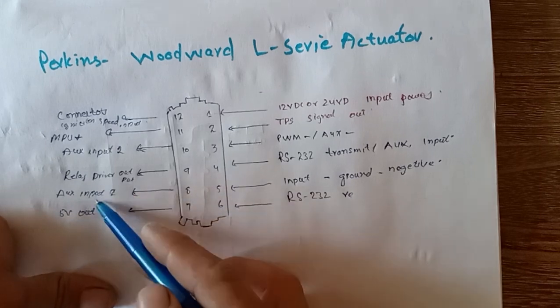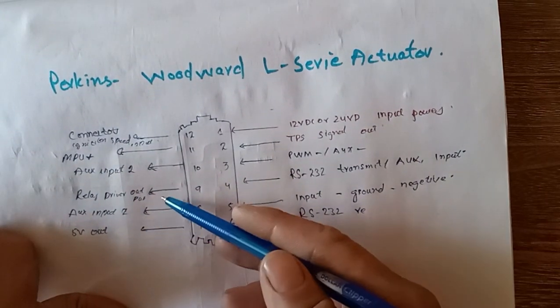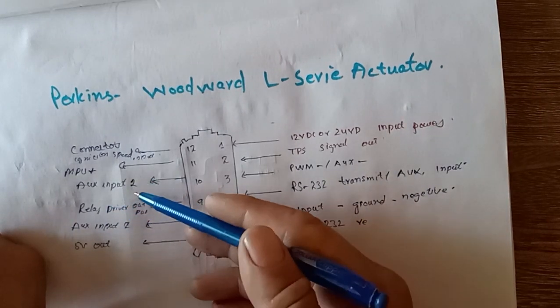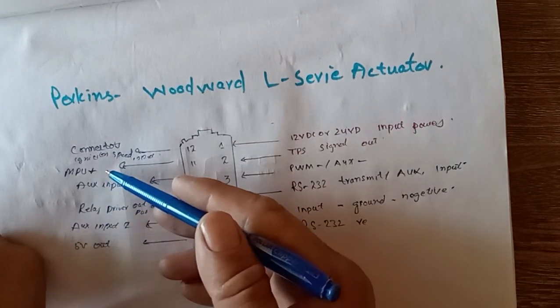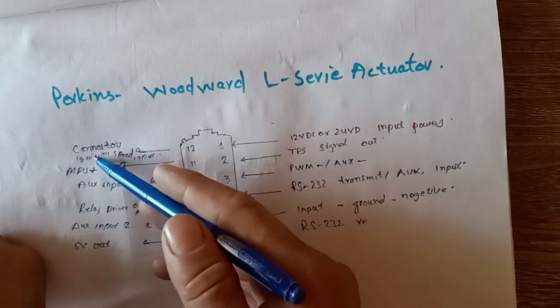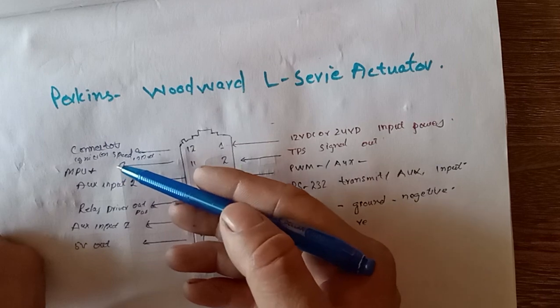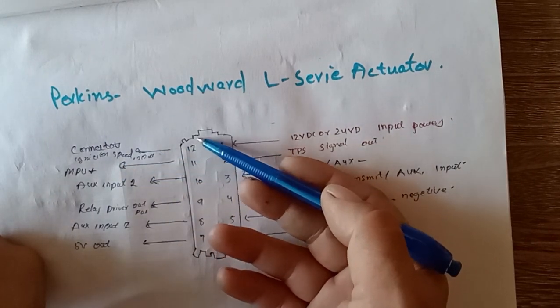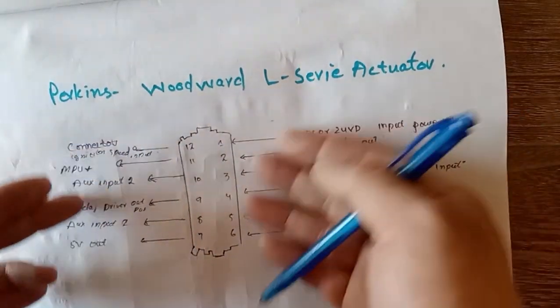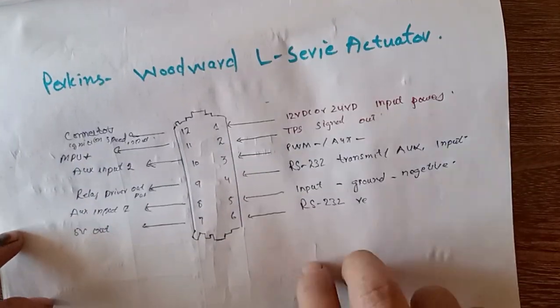Six number is RS-232 MPU input. Seven number is 5 volt output for the sensors auxiliary input, relay driver output. Auxiliary input 2, MPU positive 2 MPU input, and finally ignition key switch input positive. Now let me show you how to wire this with the engine.